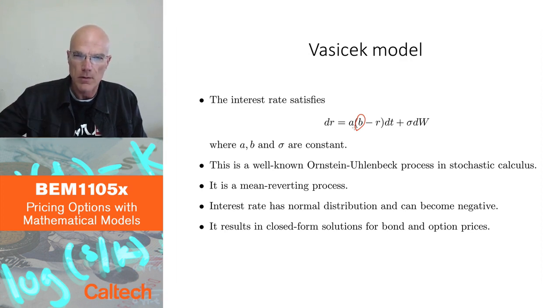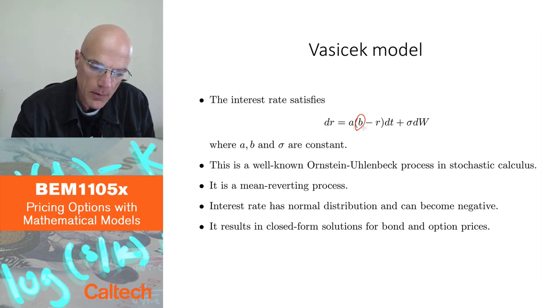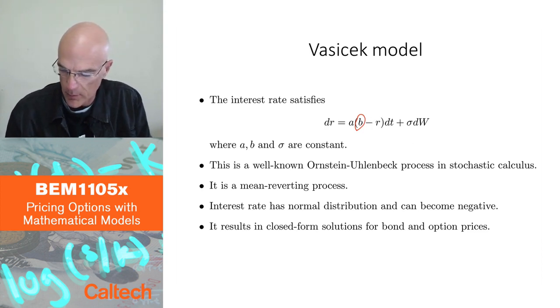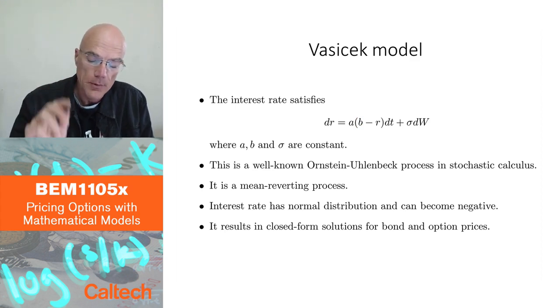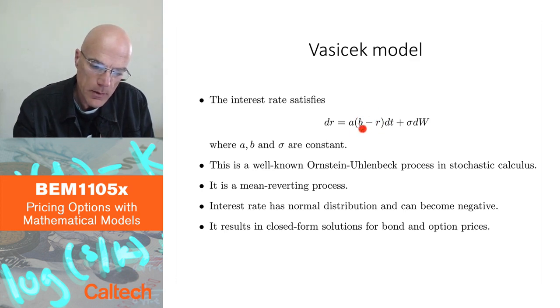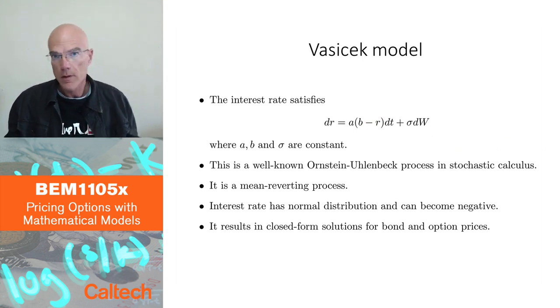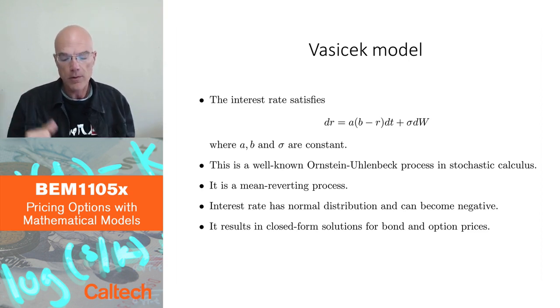You want a process which oscillates around some long-term mean value. Interest rates don't tend to, on average, go up over time or down. They oscillate. And if you look at this, if r is less than b, this is going to be positive, b minus r is going to be positive, so it's going to be pushed. If it's less than b, it's going to be pushed up towards b. And if r is larger than b, this is going to be negative, so it's going to be pushed down to b if it's larger than b. It's always pushed in the b direction, to the direction of b. That's why this is reverting to the long-term mean.